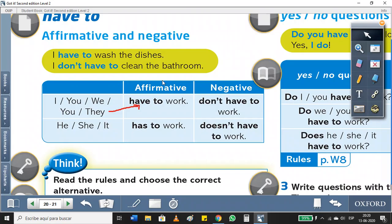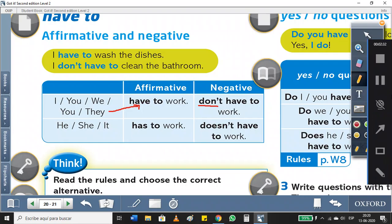But if I want to do a negative sentence, si yo quiero hacer una oración negativa, voy a agregar esta palabrita, 'don't', que significa no. Esa es la negación. So for example, you have to work - affirmative sentence. You don't have to work - negative sentence.